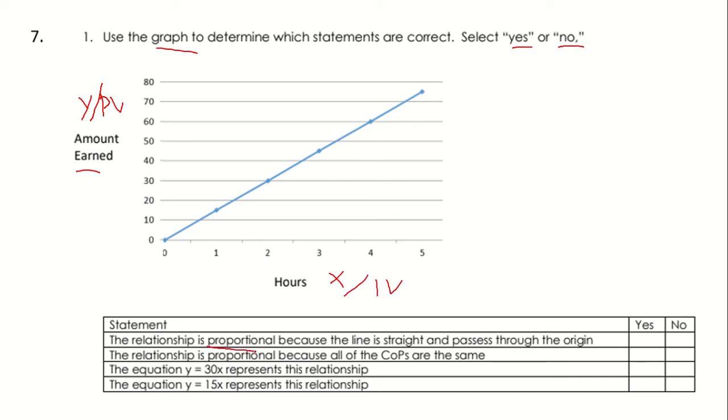Let's start off. The relationship is proportional because the line is straight and it passes through the origin. Our line is straight and it passes through point zero, zero. So yes, this is going to be a proportional relationship because the line is straight and passes through the origin.